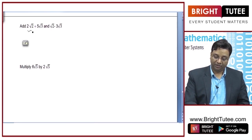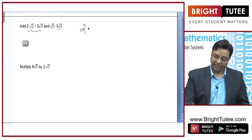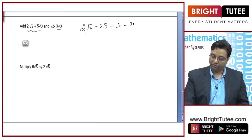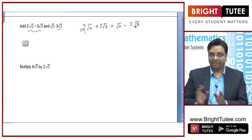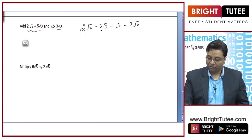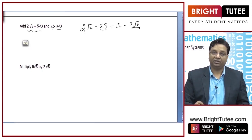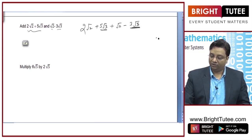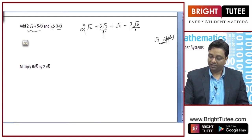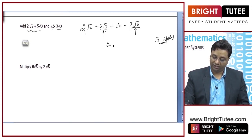Let us look at these numbers: 2√2, 5√3, √2, 3√3. If I add 2√2 + 5√3 + √2 - 3√3, the same kind of irrational numbers can be clubbed together. If you consider √3 as apples, these are 5 apples and these are 3 apples. So 5 apples minus 3 apples is 2 apples — it will be 2√3 here.